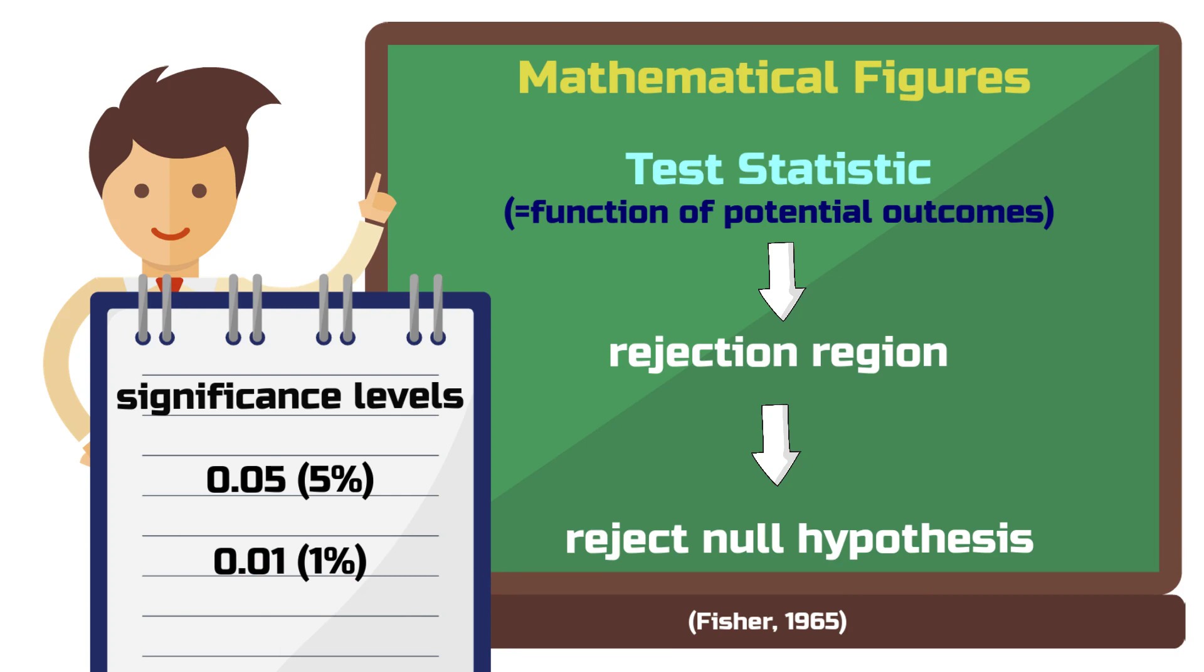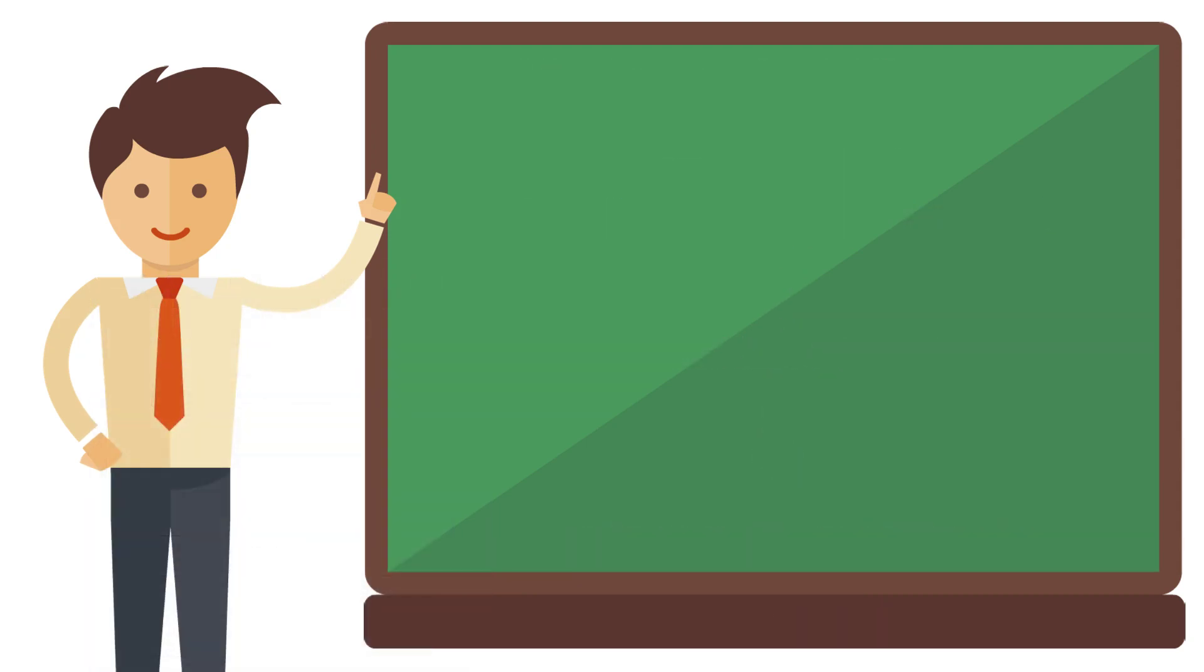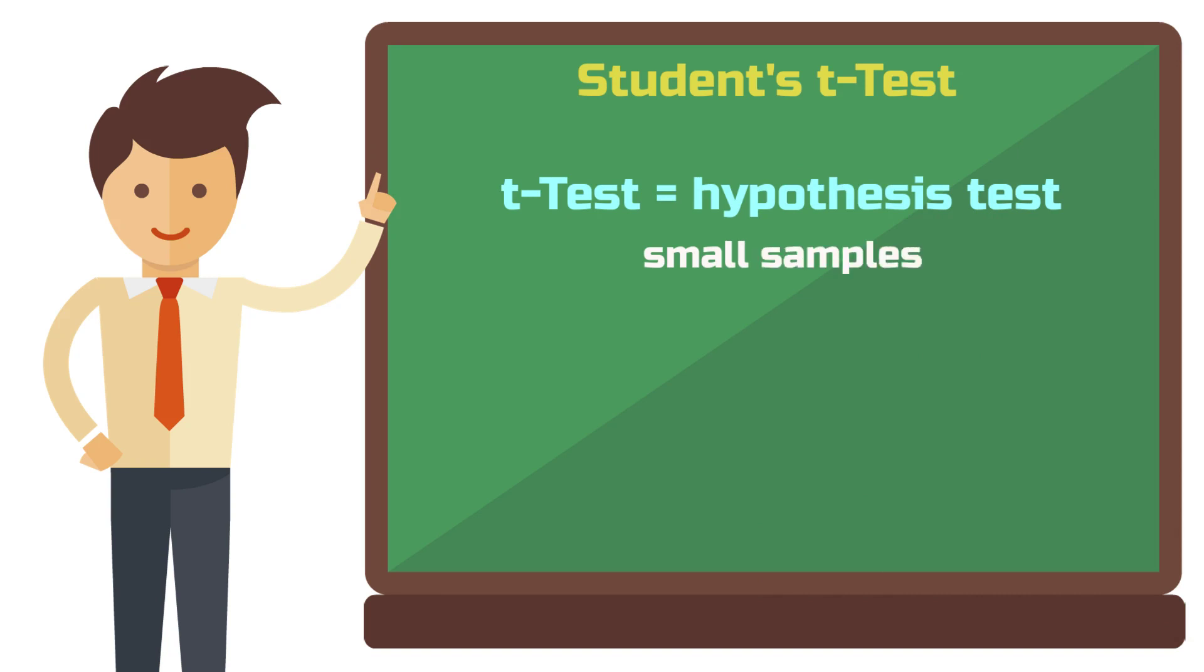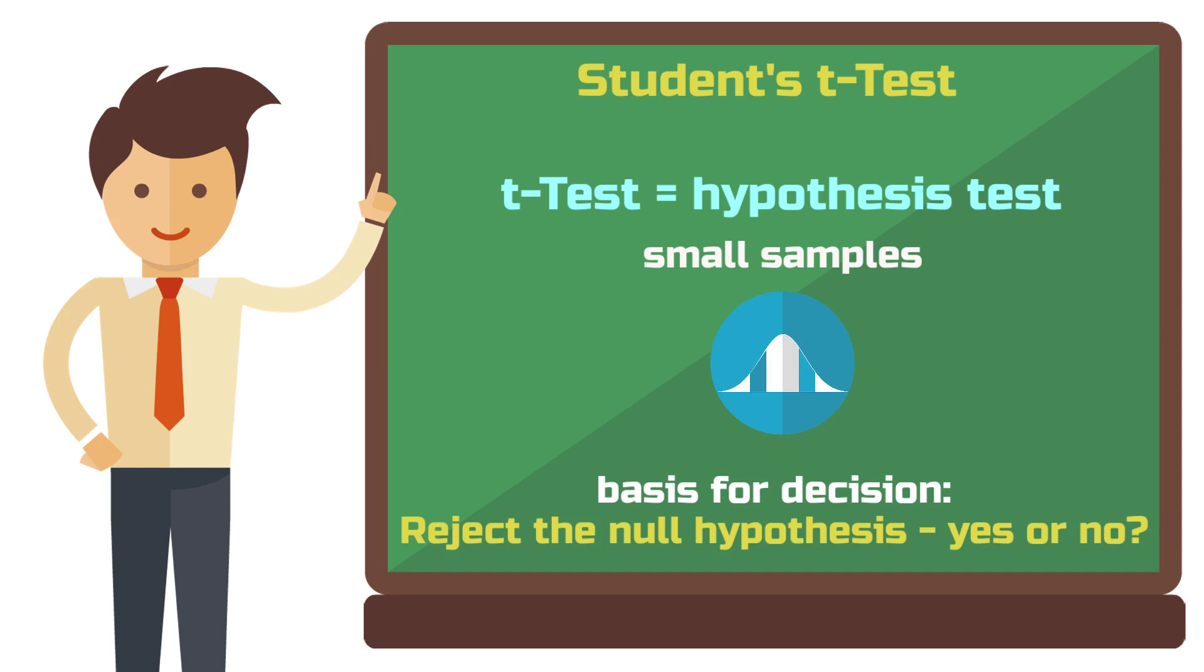Whether a result is statistically significant largely depends on the significance level used. However, a p-value becomes increasingly impressive the smaller it is. A popular test for checking statistical significance is the so-called student's t-test. It's not named so because it's meant to drive students crazy. Its inventor, William Seeley Gossett, initially published his ideas on this test under his alter ego student. The t-test is a hypothesis test and is often used with smaller samples.